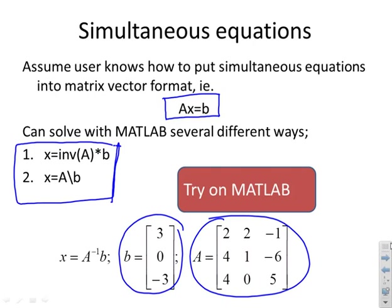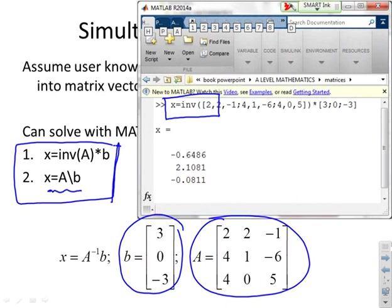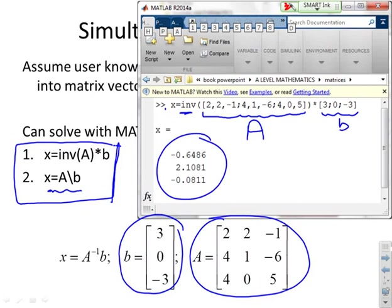You can write X equals INV A, so that does the inverse of A multiplied by B. Or MATLAB provides this shorthand which you may sometimes want to use. Here's the MATLAB code to demonstrate that it works. You'll see I've compacted it into a single line. This first bit in square brackets is my matrix A. Over here I've got my vector B and here I've got INV. You'll see I've done the inverse of matrix A times B and it's given me the result.